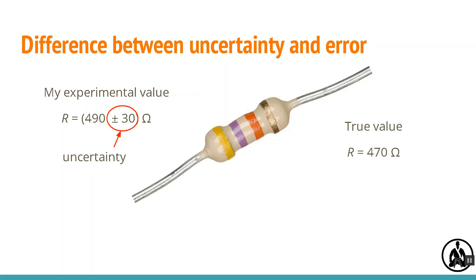Now suppose that the true value of the resistor is 470 ohms. By true value we mean the value you would get if you measured it with a perfect measuring instrument. We can never know the true value, but we treat the value given by the manufacturer as the true value, and we also treat accepted values like 9.81 meters per second squared for g as true values as well.